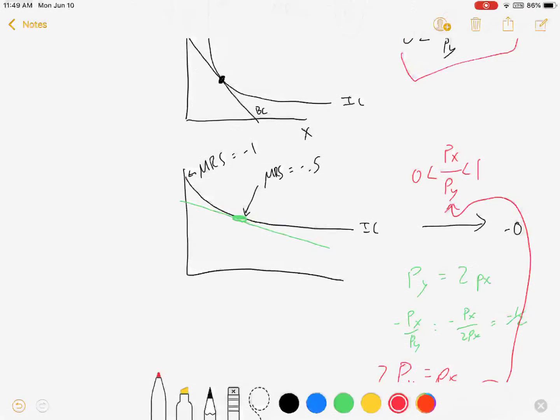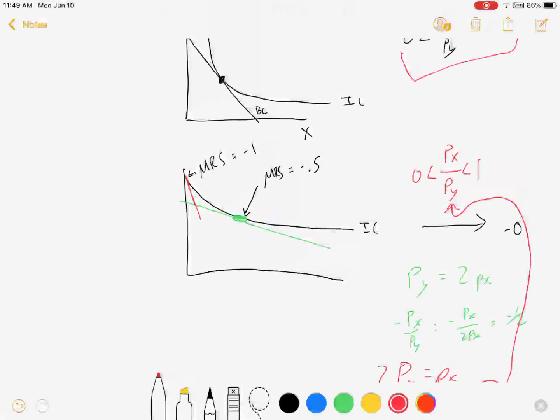In other words, the budget constraint is steeper than the indifference curve ever is. It will never be tangent. And that is a situation where we will get a corner solution.